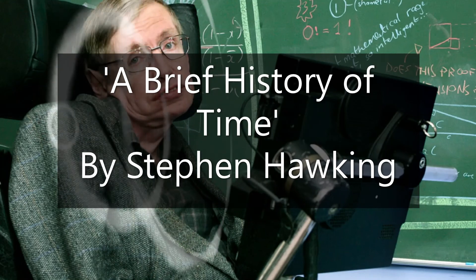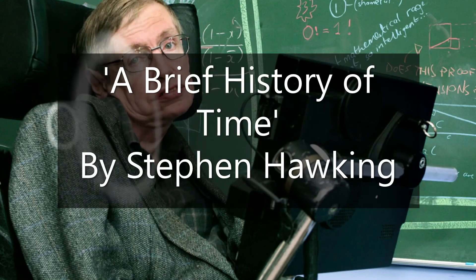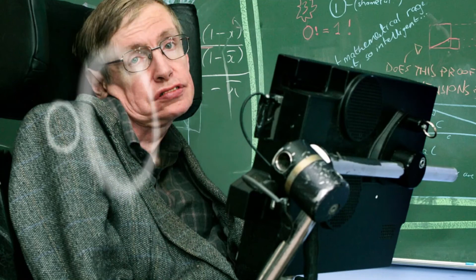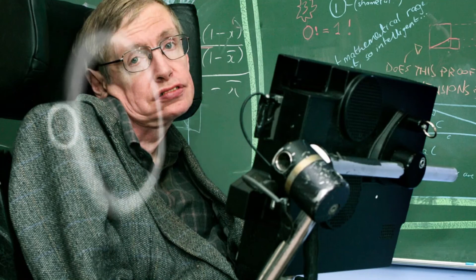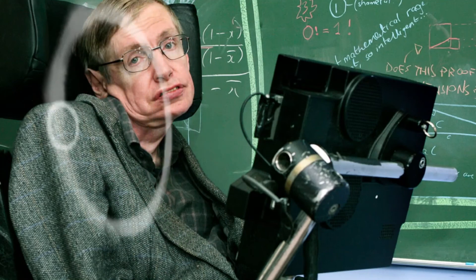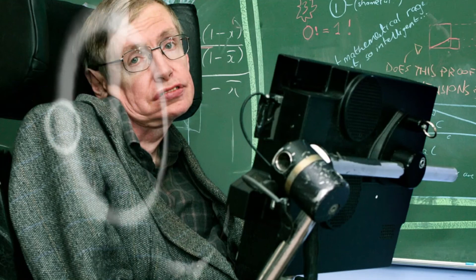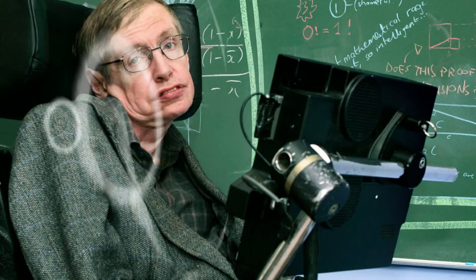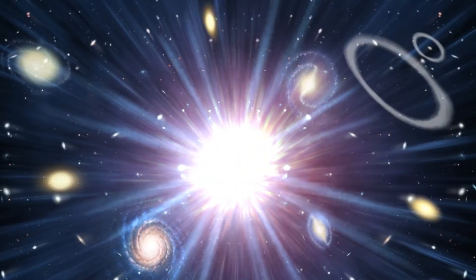It must be noted that he included complex models, diagrams, and illustrations to detail some of his concepts. A Brief History of Time deals with various cosmological advances across the ages in 12 chapters. The first chapter talks about the picture of the universe throughout the ages. Hawking initially mentions the work of early Greek philosophers, such as Aristotle and Ptolemy, who proposed a geocentric universe.